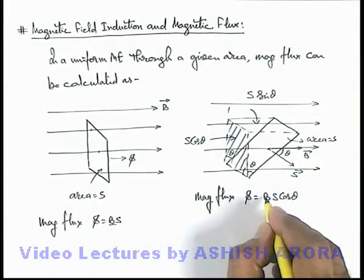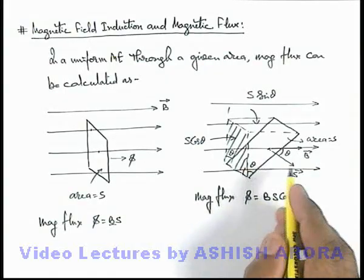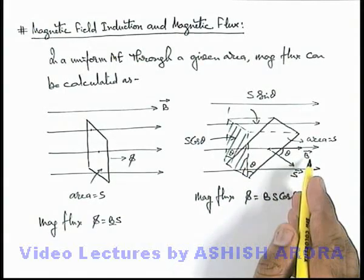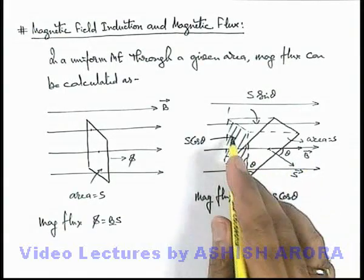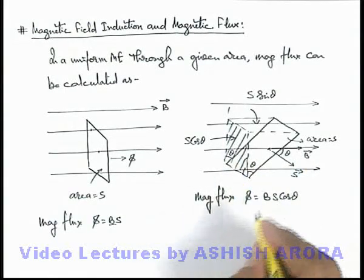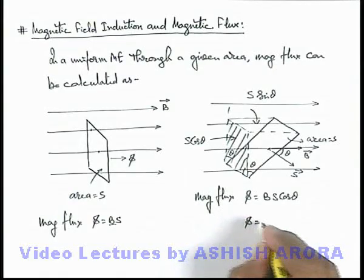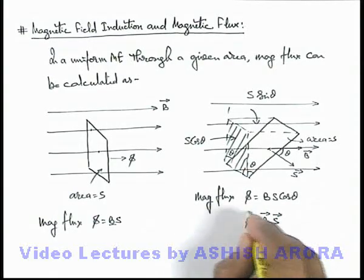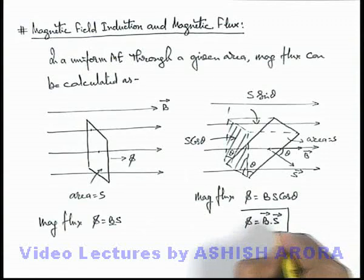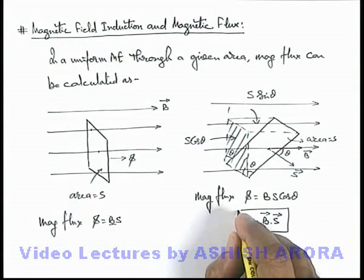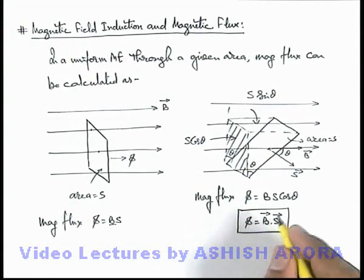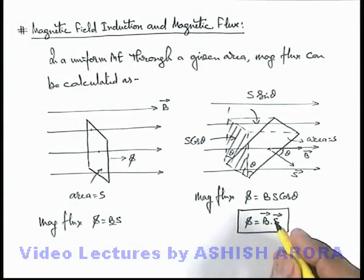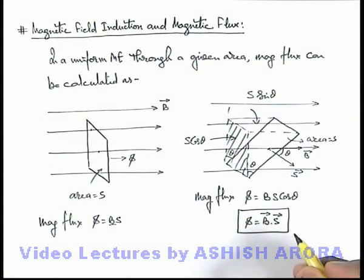So here we can write the magnetic flux through this area: phi is equal to B S cosine theta, because the flux density of magnetic induction is the flux per unit normal area. So in this situation the flux can be written as B dot S, which is almost a similar way to what we have already applied in the calculation of electric flux.